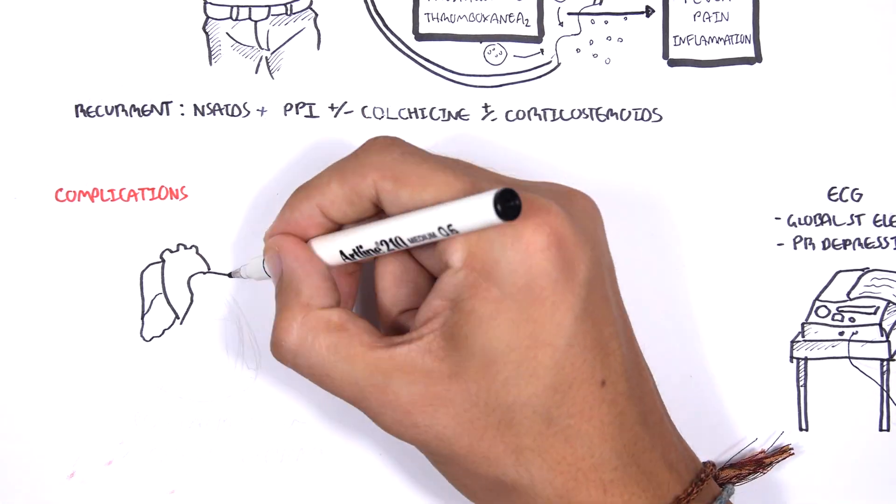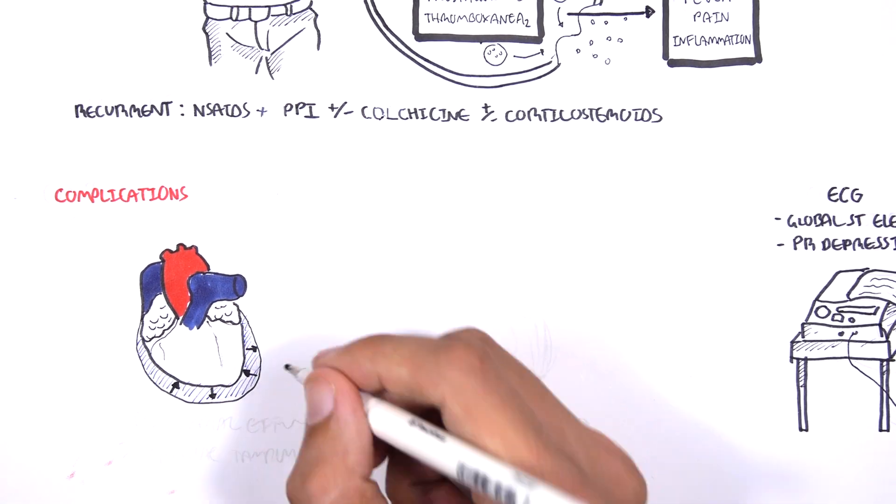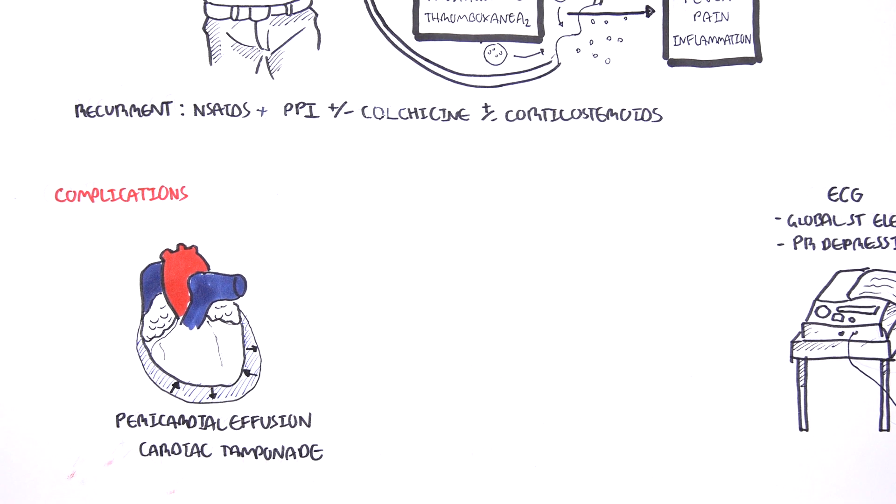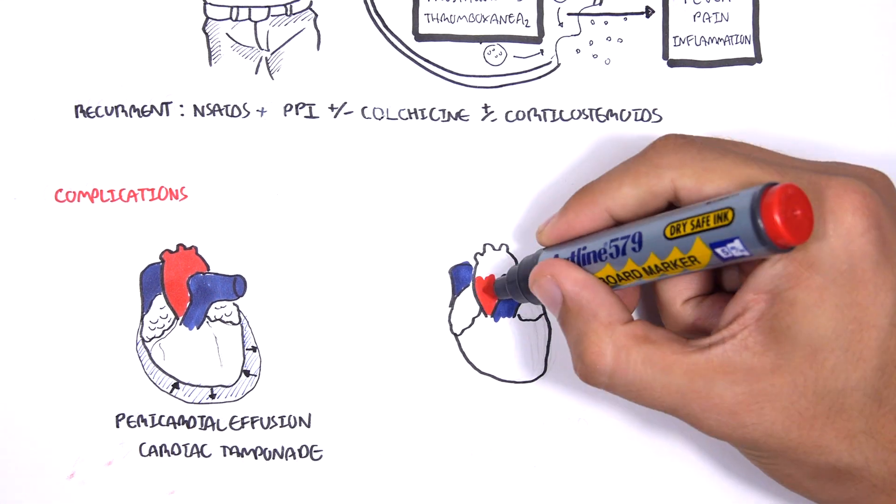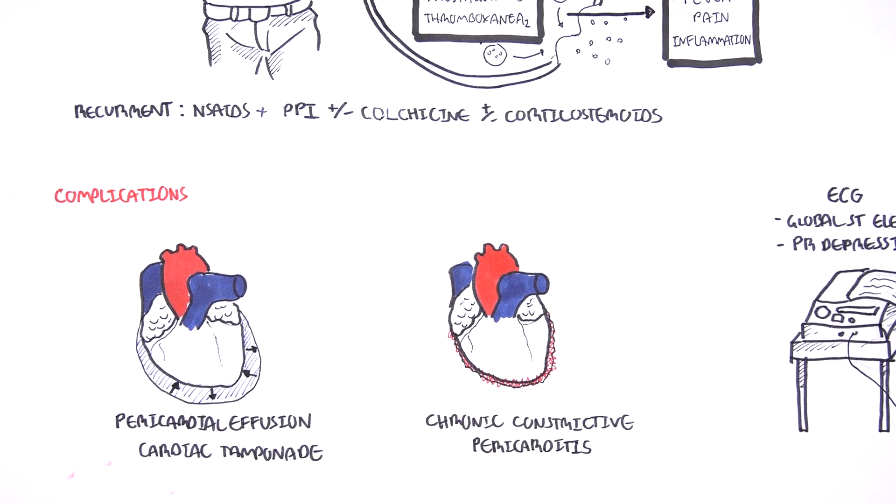Complications of pericarditis include pericardial effusion, which we mentioned earlier. Pericardial effusion can become cardiac tamponade once the fluid builds up and becomes so bad that it impairs the heart's contractility. Another complication can be chronic constrictive pericarditis.